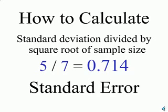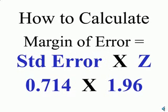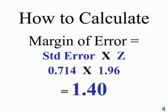That 0.714 is our standard error. We then take the standard error times our z — in other words, 0.714 times 1.96. That's our margin of error: 1.40.